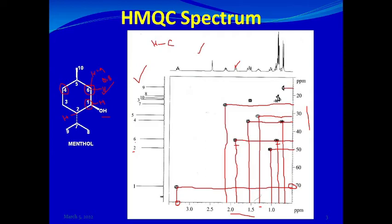The CH3 groups resonate at about 15–16 ppm on the carbon scale, and their protons resonate at around 0.7 ppm. This is how you read the HMQC spectrum. Let's now look at another example.